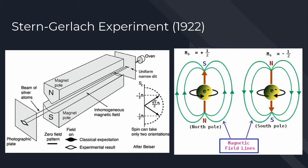The Stern-Gerlach experiment performed in 1922 showed us the degree of electron spin. Assuming classical physics, an electron beam passing through a magnetic field would show a display that would be randomly oriented due to the random orientation of the magnetic moment of the electrons. Instead, magnetic moments were reoriented to being one of two positions: spin up and spin down.